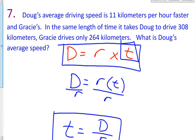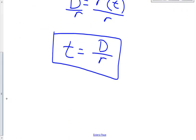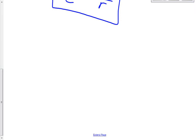Look at what it says here: Doug's average driving speed is 11 kilometers per hour faster than Gracie's. In the same length of time - this is going to be important - in the same length of time, it takes Doug to drive 308 kilometers. Gracie only drives 264 kilometers. So if the time is equal, if Doug's time equals distance over rate, and who's the other one? Gracie? Yes.